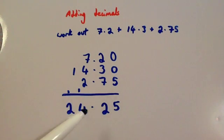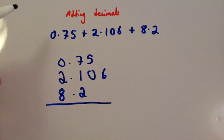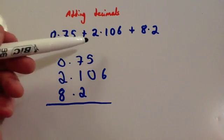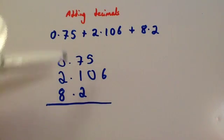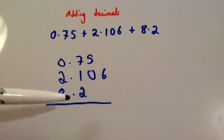So, the answer is 24.25. Let's have a look at another example. So, 0.75 plus 2.106 plus 8.2. So again, I've lined them up, and I've made sure the decimal points are in the right place.